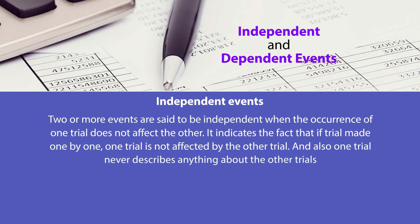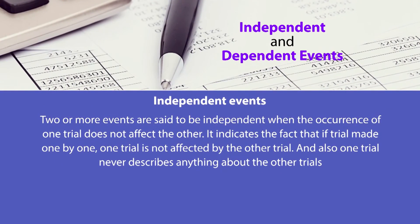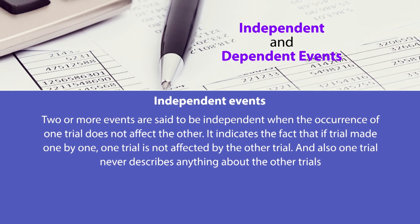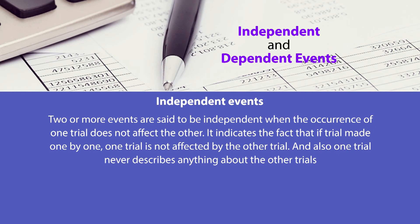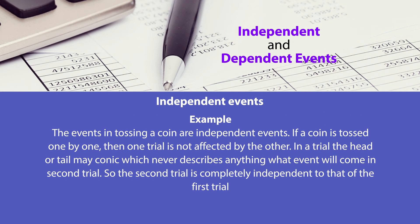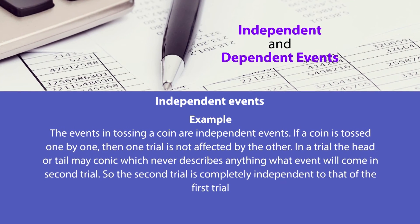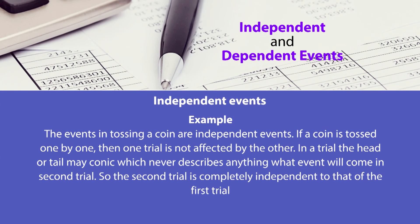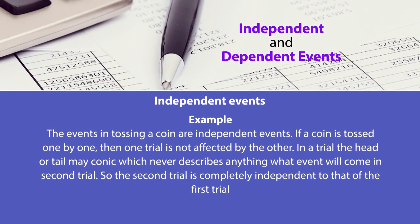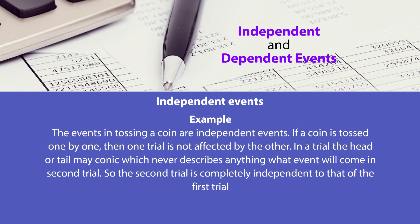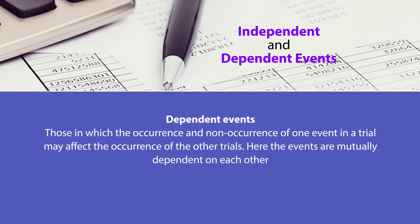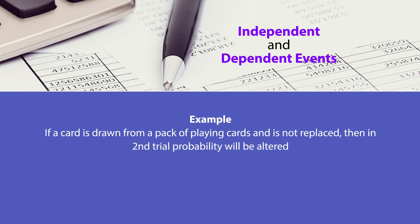Independent events are when two or more events are said to be independent — when the occurrence of one trial does not affect the other. One trial is not affected by the other trial, and one trial never describes anything about the other trial. For example, the events in tossing a coin are independent events: if a coin is tossed one by one, then one trial is not affected by the other, and the head or tail in one trial never describes what event will come in the second trial. Dependent events are those in which the occurrence or non-occurrence of one event in a trial may affect the occurrence of other trials — events are mutually dependent on each other. For example, if a card is drawn from a pack of playing cards and it is not replaced, then in the second trial the probability will be altered.